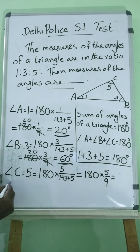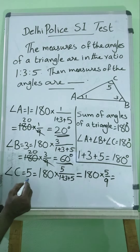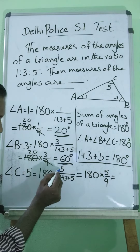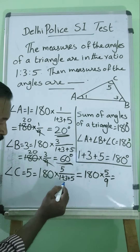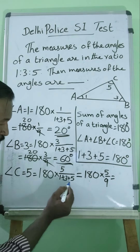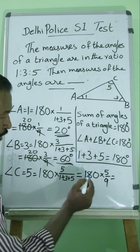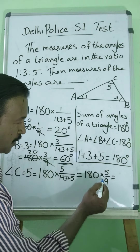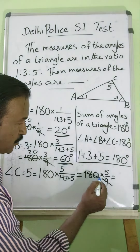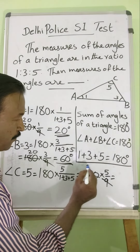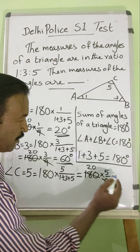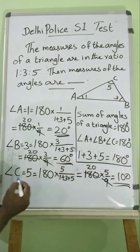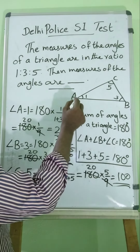Then Angle C, with ratio 5, equals 180 times 5 divided by the sum of the ratios 1 plus 3 plus 5, that is 180 times 5 by 9. Here also 9 cancels, giving 20 times 5, which equals 100 degrees.